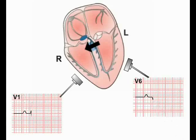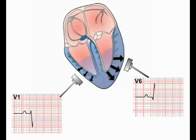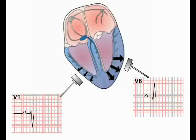As the septum continues to depolarize, the depolarization wave spreads out over the muscle mass of the ventricles. The magnitude of the electrical signal generated by depolarizing muscle is directly proportional to the mass of muscle generating it — the more muscle present, the more electrical signal generated and the more signal the ECG machine detects. The left ventricle has a much greater muscle mass than the right, and so dominates the electrical signal of ventricular depolarization in all leads. Therefore, as the wave of electrical activity reaches the main muscle mass of the ventricles, the left ventricular signal overwhelms all other signals, and as it is moving away from V1, the deflection produced on the ECG recording from this lead becomes negative.